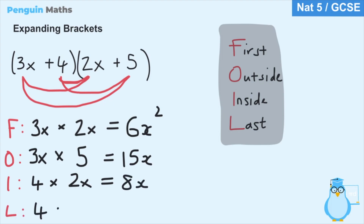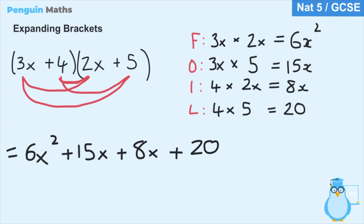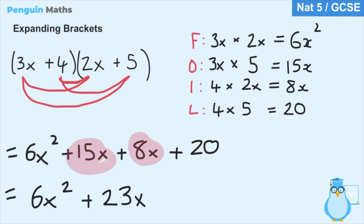Finally for the last terms we have 4 multiplied by 5 which gives us 20. Now we've multiplied everything in one bracket by everything in the other. Gathering these together, our expression becomes 6x squared plus 15x plus 8x plus 20. We have two terms containing x — 15x and 8x — which can be added together. 15 plus 8 gives us 23, so we have 6x squared plus 23x plus 20.